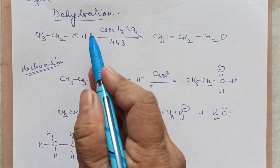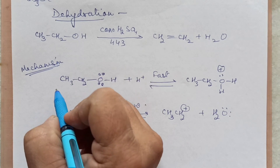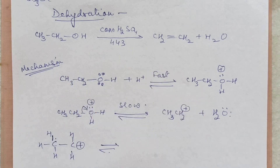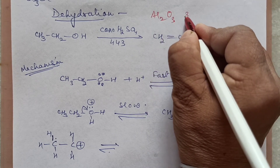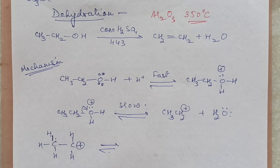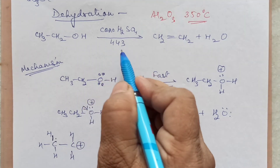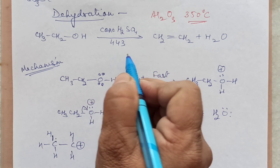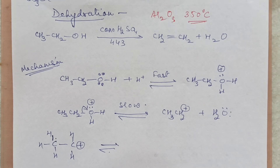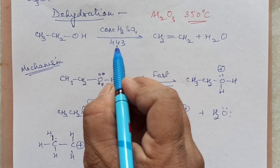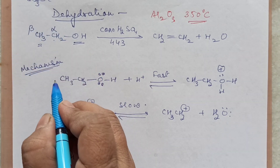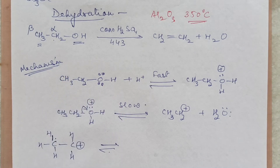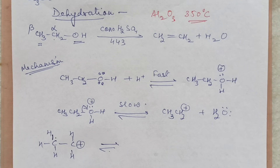The next reaction is dehydration — removal of water. Dehydrating agents used are concentrated sulfuric acid or alumina. With alumina you need a higher temperature of 350°C. With concentrated sulfuric acid you need 443 K to get alkene — at 413 K you get ether instead. The reaction: alcohol with concentrated H2SO4 at 443 K — OH leaves from the alpha carbon and H leaves from the beta carbon. This is called beta elimination, giving water and an alkene.